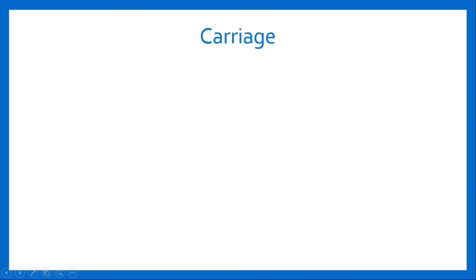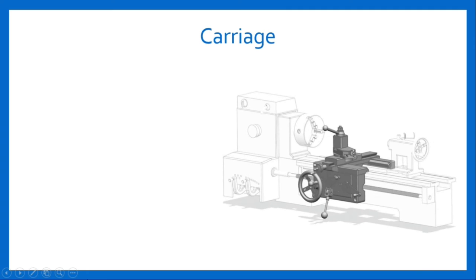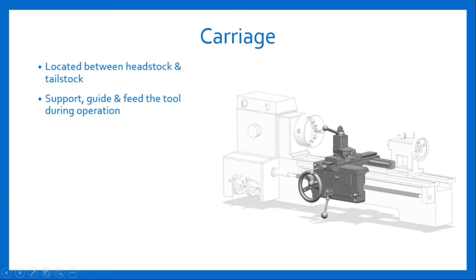The third major component of Lett Machine is carriage. Here is a figure of carriage. Carriage is located between headstock and tailstock. The basic function of carriage is to support, guide and feed the tool against the job during operations. It can be moved along the bed either towards or away from headstock. It has several parts to support, move and control the cutting tool.